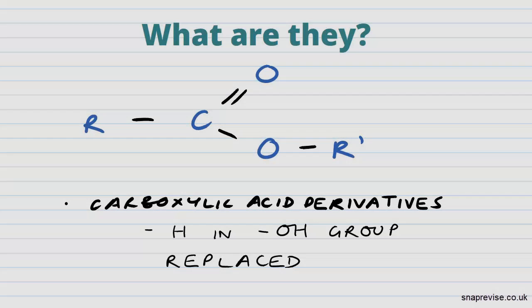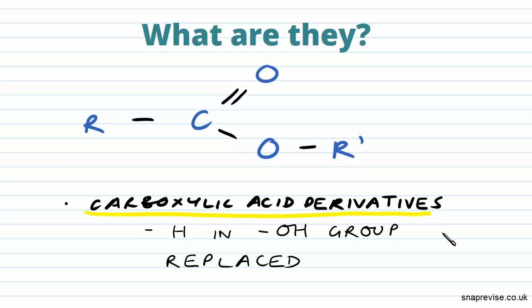So what are esters? Well, esters have this general formula that you can see here. They are carboxylic acid derivatives. They're derived from carboxylic acid, so we're going to use carboxylic acids to make them. You can see they have a very similar structure to carboxylic acid, except the H in the OH group has been replaced by another group.